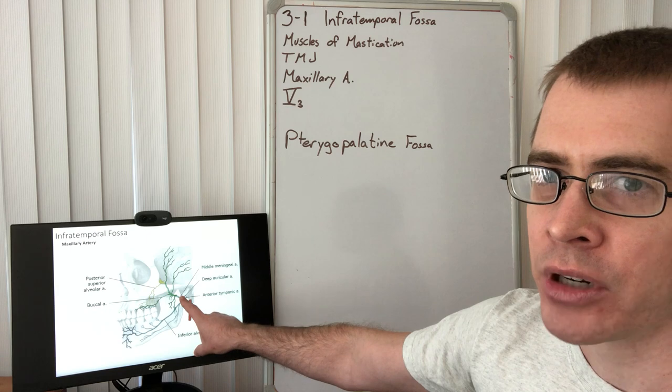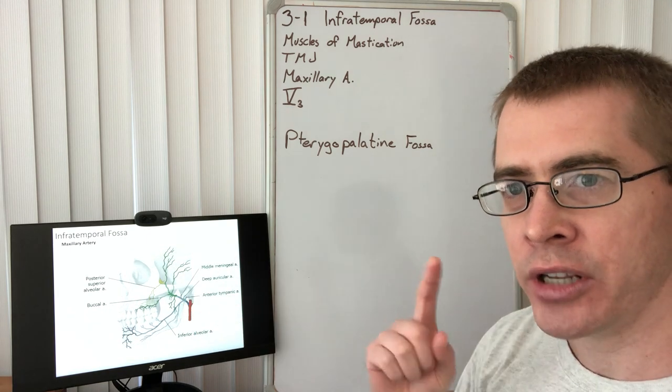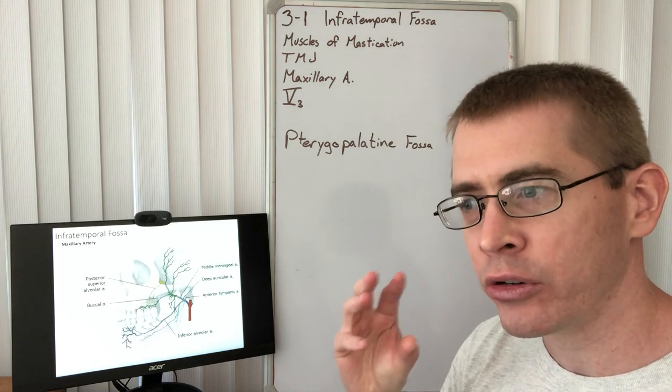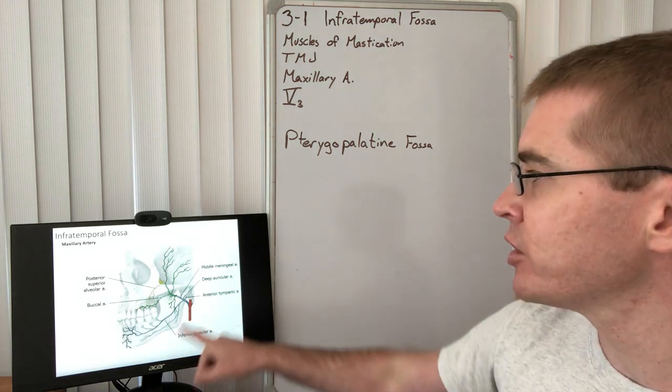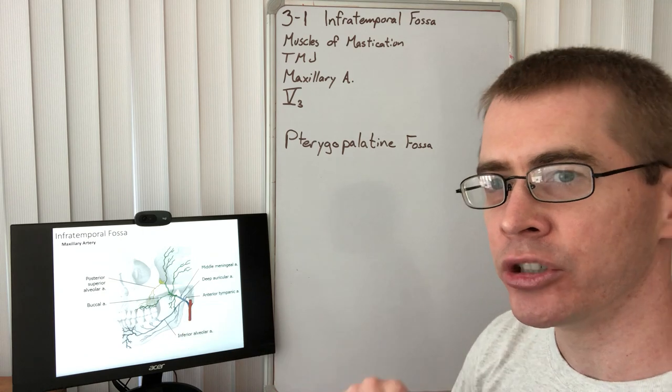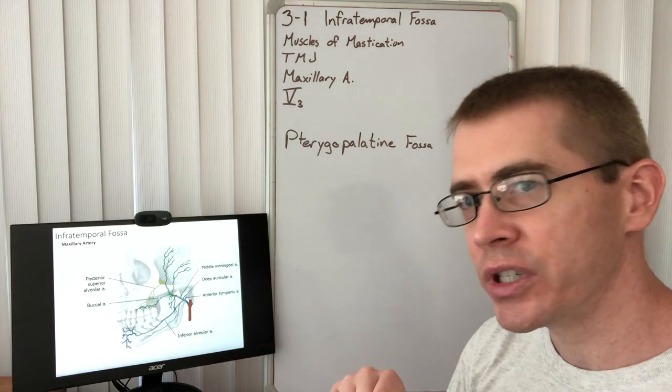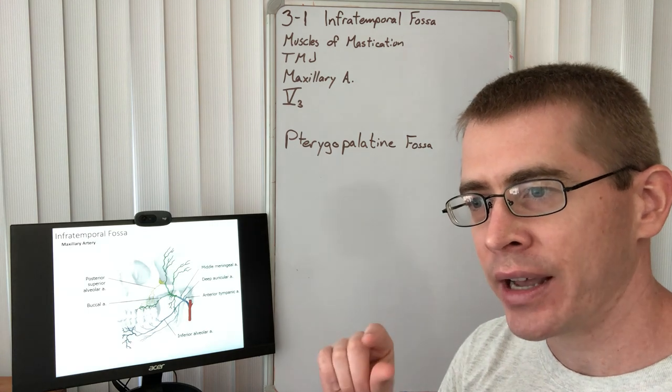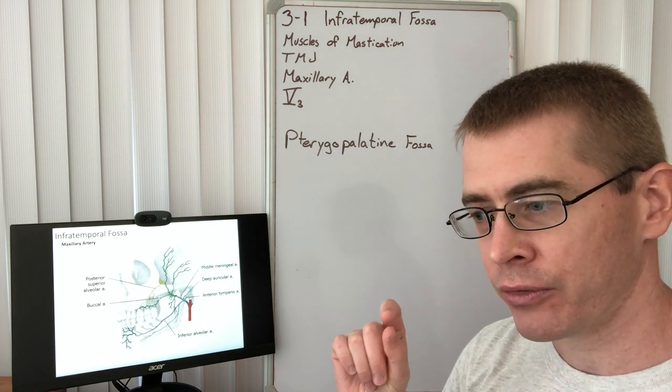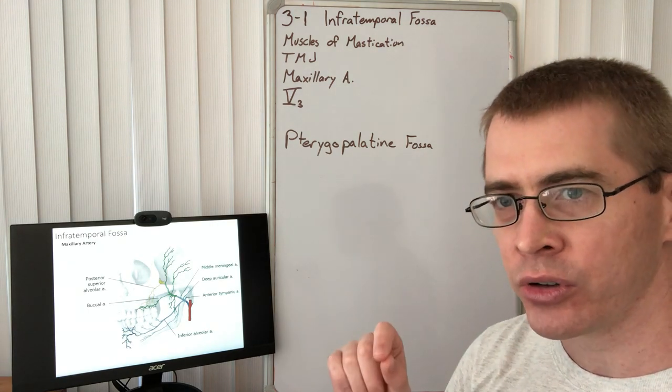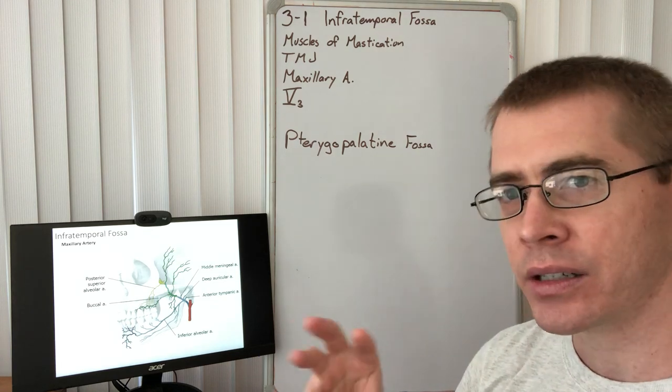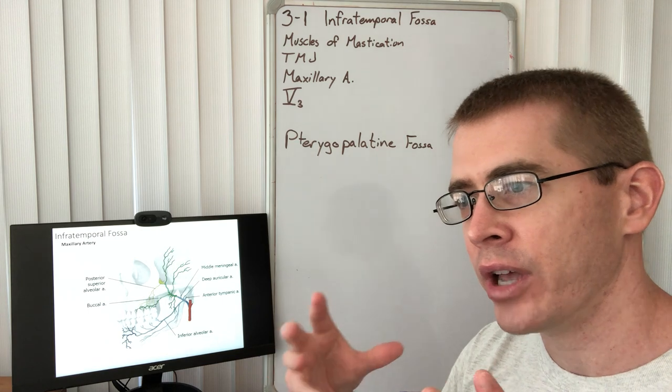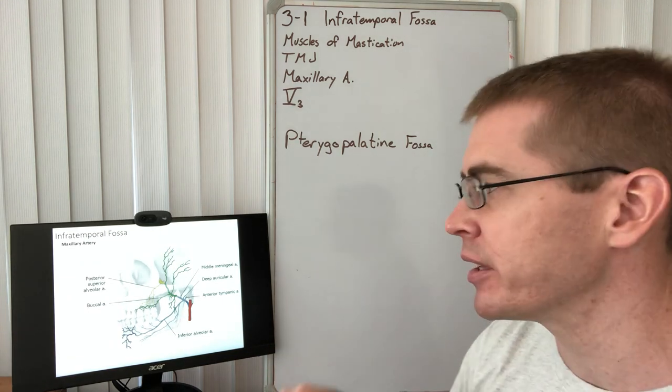We also have middle meningeal artery which enters the cranium and supplies the dura of the brain along the middle cranial fossa. That's why it's named the middle meningeal artery. We'll see that this artery actually enters the cranium through a tiny foramen named foramen spinosum, and this has some implications associated with headache and intracranial pressure and things like that we'll get to.